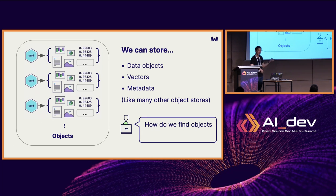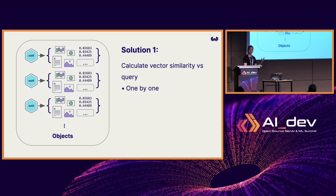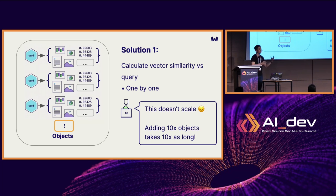Here's our first problem. Our user says: that's great, I can store a bunch of stuff — but how do we now find objects by similarity? Remember, we said that vectors let us find objects by similarity. Solution one: you can just calculate vector similarity against a query one by one. But our user says: it works, but it doesn't quite scale. If I have 10 times as many objects, it takes 10 times as long; 100 times as many objects, and so on. So here's our first challenge: how do we scale search?